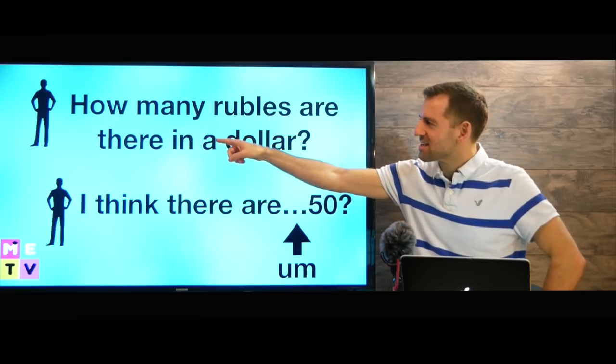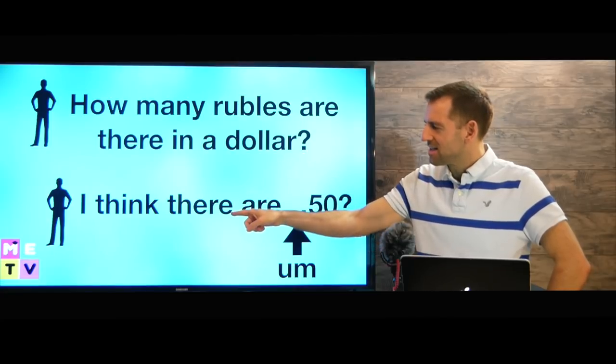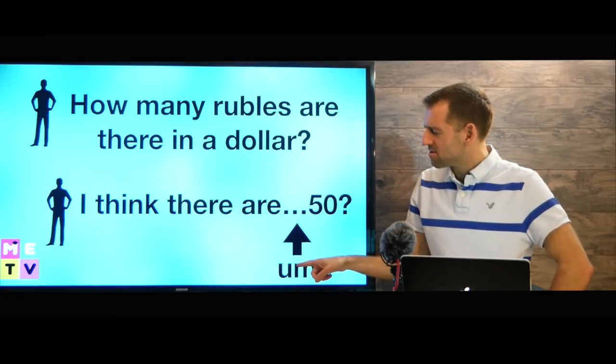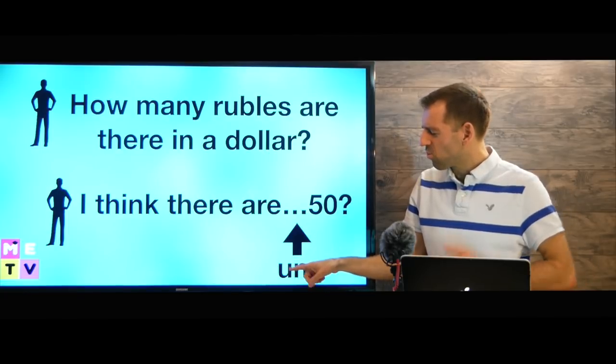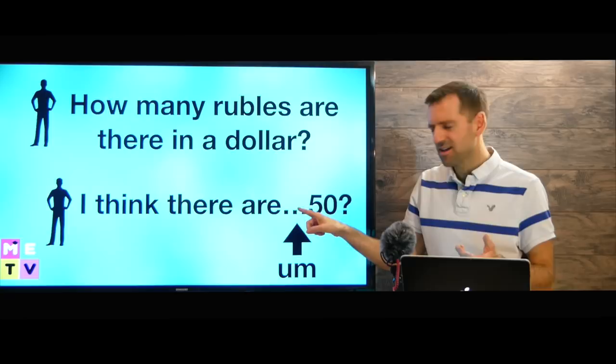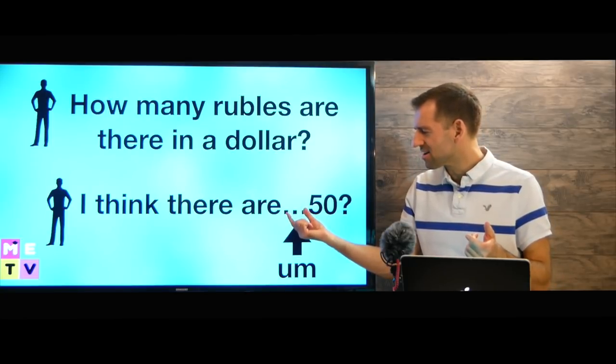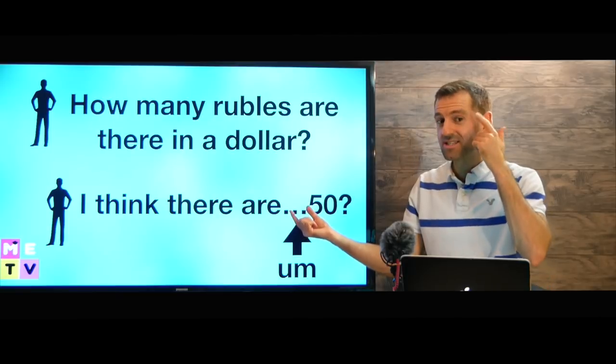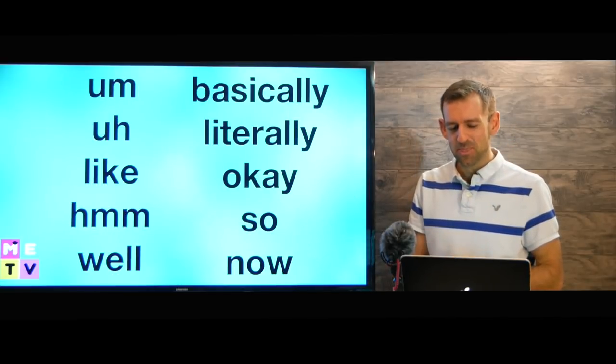So this guy says, how many rubles are there in a dollar? And he says, I think there are, um, 50. Why does he put this word in here? It's because there's a pause here. There's a pause here because he's thinking, so he puts this word in there.